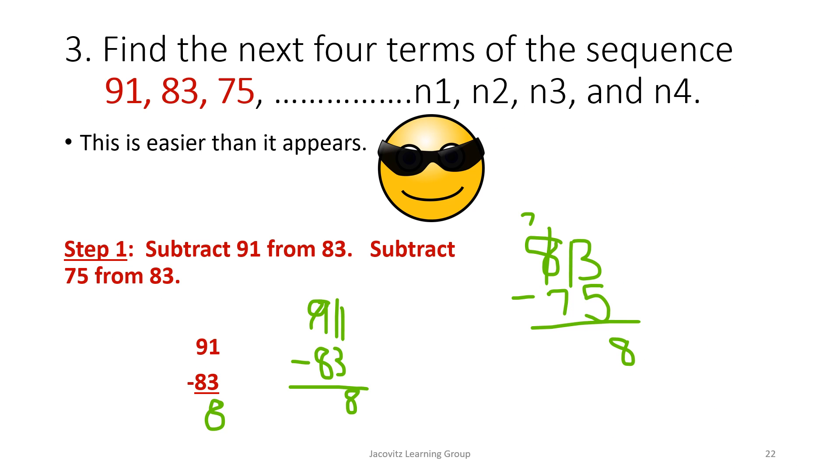Next question is find the next four terms of the sequence 91, 83, 75. And it puts these ellipses here so that you can find out what they are. And they are n1, n2, n3, and n4. So if you subtract 91 from 83, you get 8. Okay, and then you go 83 minus 75. So we took care of this term. We got this. And then you would know, let's see if you do 75 minus 8, what you're going to get. And are you going to get the next sequence, which would be 67?